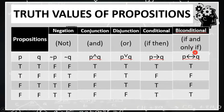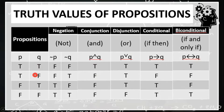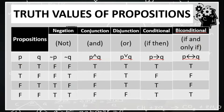And lastly, for biconditional, we use 'if and only if,' represented by a double-headed arrow. If both propositions have the same truth value, then the biconditional statement is true — true-true gives true, and false-false is still true. Otherwise, it is false. Don't forget all of this because we will be using this concept in determining the truth values of a given proposition.